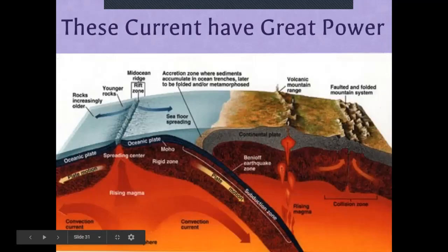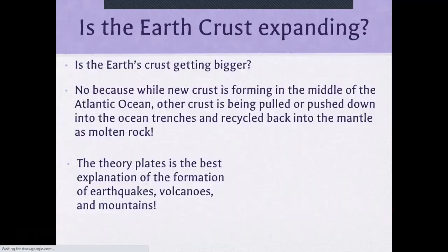Here's a detailed picture of a subduction zone where one plate is being pushed downward — and this is often where volcanoes will form, where plates are colliding and converging.